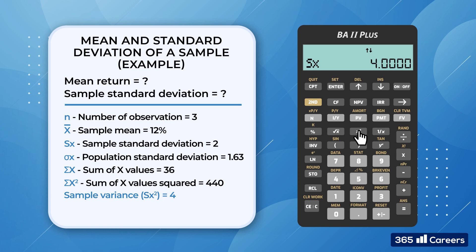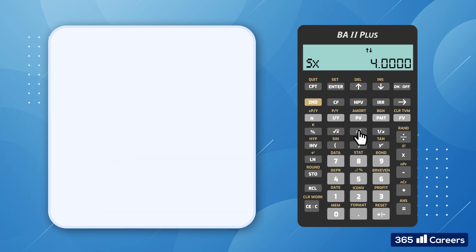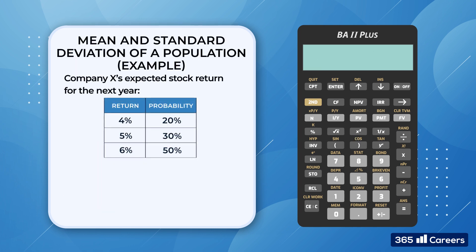Now, let's say we would like to predict company x's next year's return. What we have is a table with the firm's three possible returns, and their respective probability of occurring. What's the company's mean return and population standard deviation? We'll approach this problem in the same way as we did before.